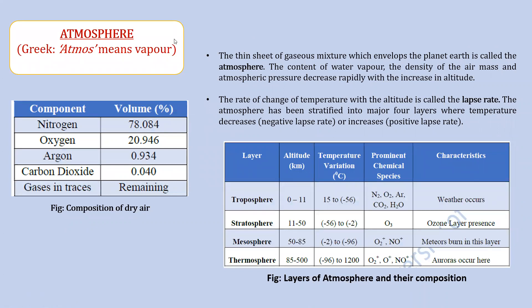The next component is the atmosphere. The term comes from the Greek word 'atmos', meaning vapor. We will study two important heads: the components of the atmosphere, and the layers of the atmosphere. Atmosphere is defined as a thin sheet of gaseous mixture which envelops planet Earth. The content of water vapor, the density of the air mass, and the atmospheric pressure decrease rapidly with the increase in altitude.